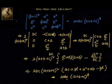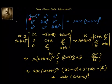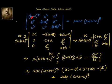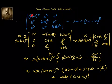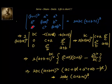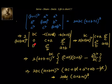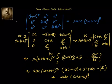Let us recap: first we did R1 assigned as R1 minus R2 minus R3, so that b² and c² cancel and we are left with 2bc. Then we took 2 out as a common factor. Next, R2 = R2 minus R1·(b/c) to make a₂₁ = 0, and R3 = R3 minus R1·(c/b) to make a₃₁ = 0. Finally we expanded the determinant using the first column element bc and simplified the resulting 2×2 determinant to get the answer 2abc(a+b+c)³.